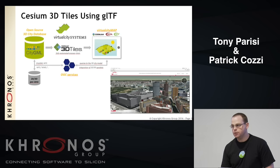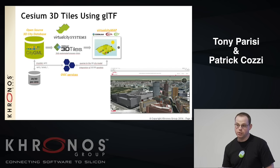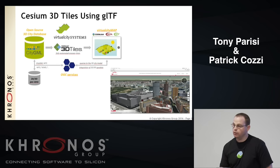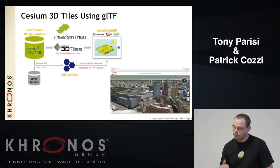A nice ecosystem story: there's a group called OGC (Open Geospatial Consortium) that has a standard called CityGML — an XML format for 3D buildings. A group called Virtual City Systems has converted it to 3D Tiles and therefore GLTF, rendering amazing city scenes inside Cesium. The screenshot shown is Berlin — 540,000 textured buildings.